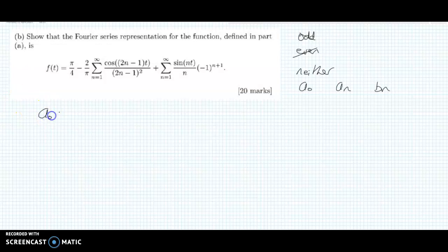The formula for A0 is in the back of the exam paper, and this is the one I use here. A0 equals 2 over T, and the limit on top there is T over 2, then we have minus T over 2, and F of T DT, F of T being whatever function we're dealing with.